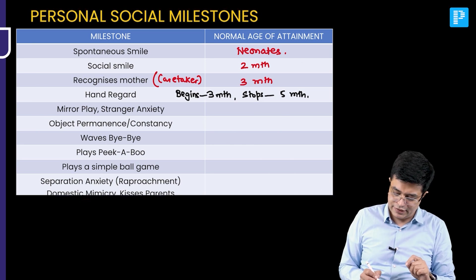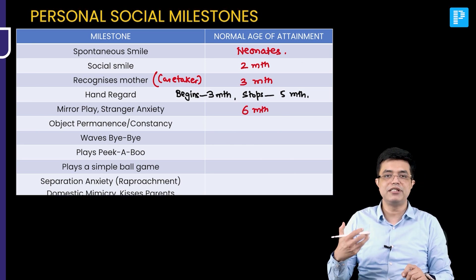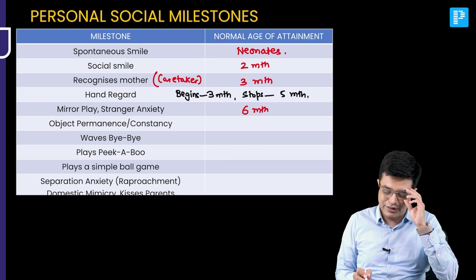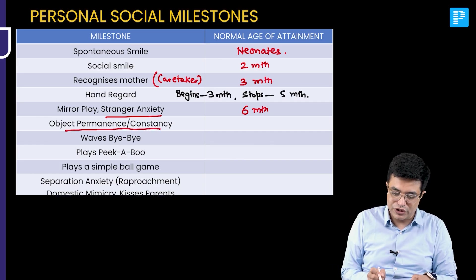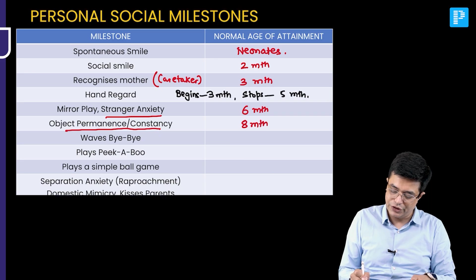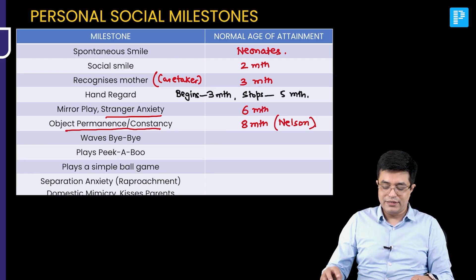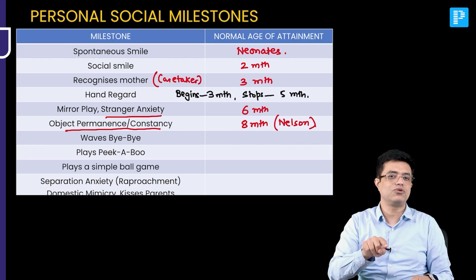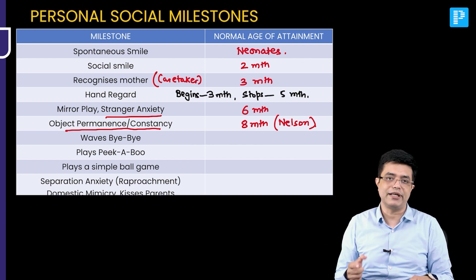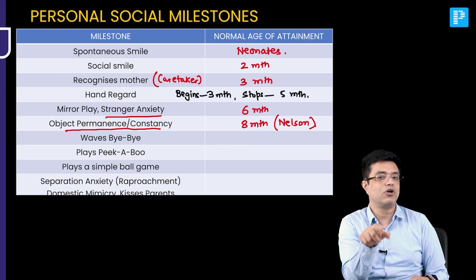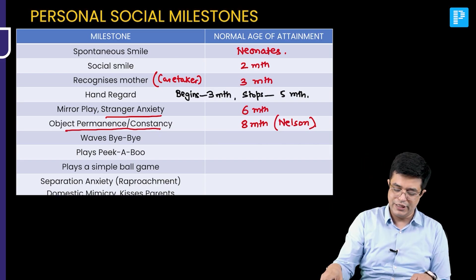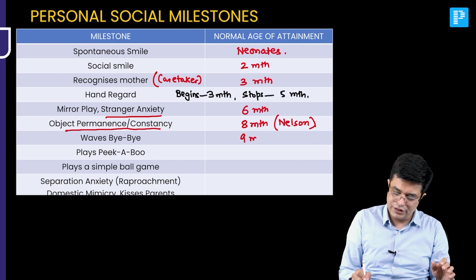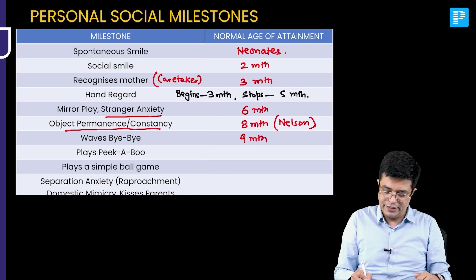Mirror play as well as stranger anxiety come at 6 months of age. Mirror play means the child plays with his own mirror image and feels happy looking at it. Stranger anxiety means the child is afraid of new faces. Object permanence or constancy generally comes at 8 months of age according to Nelson's 22nd edition — the child knows that an object continues to exist even if not visible and will try to uncover and find it. Waving bye-bye comes at 9 months. Playing peekaboo — covering and uncovering the face — comes at 10 months of age.